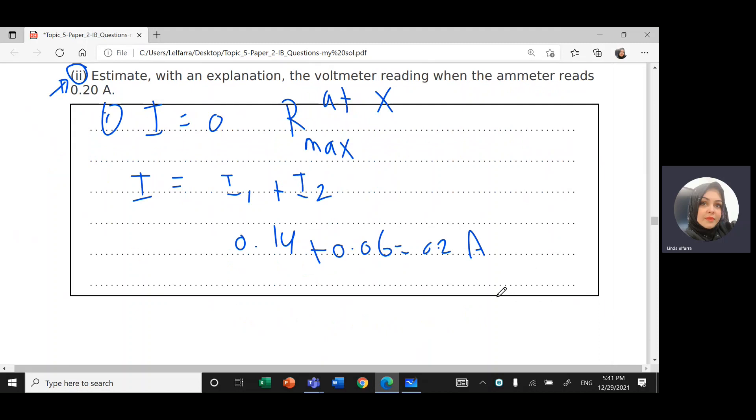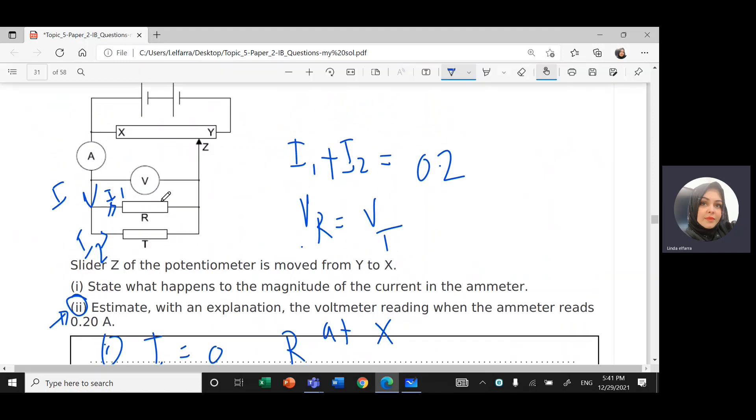And this will happen at voltage V equals 2 volts. So estimate with an explanation, the voltmeter reading, when the ammeter reads 0.2, the voltmeter reading will be 2 volts, and it should be the same voltage because these two resistances are connected in parallel, connection in parallel. They should have the same voltage.